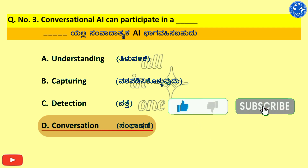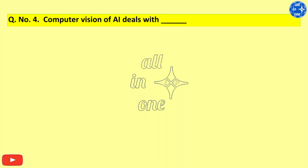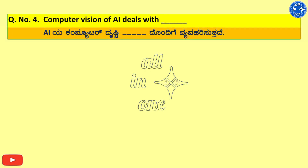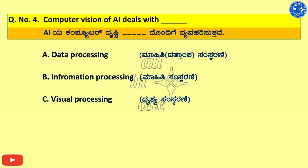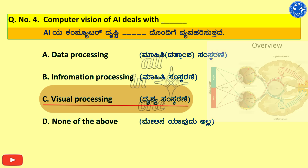Question No. 4. Computer Vision of AI deals with dash. Options: A. Data processing, B. Information processing, C. Visual processing, D. None of the above. Right answer is C. Visual processing.